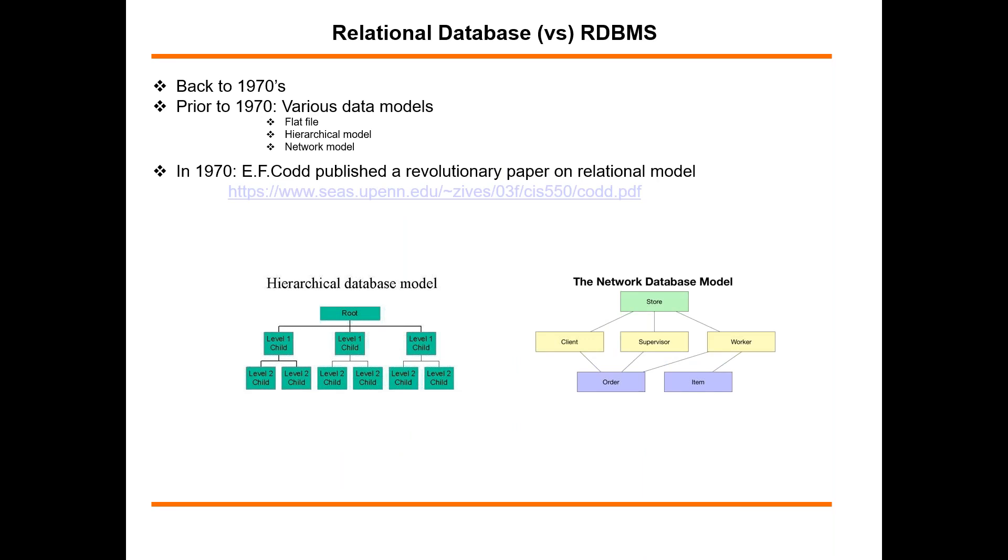If we want to understand what is a relational database, we have to go back to the 1970s. Prior to 1970s, if you would like to design a new database, there are three major data models. Maybe you can just use flat files to store your database, or you can depend upon hierarchical data model, or you can depend on network data model.